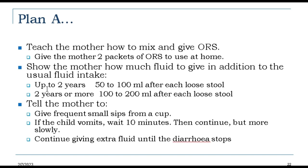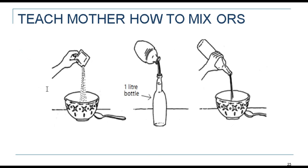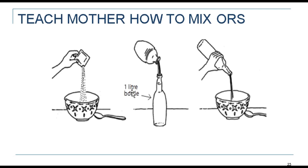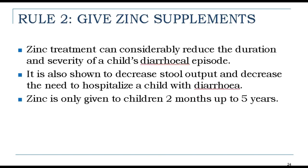This diagram shows how to teach a mother to mix ORS. The container holds one liter of clean water, one sachet of ORS, and a spoon. Mix the ORS sachet into the one-liter bottle of water, stir, and give the solution to the child.